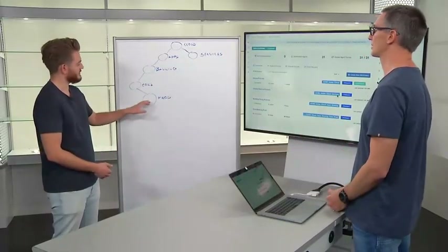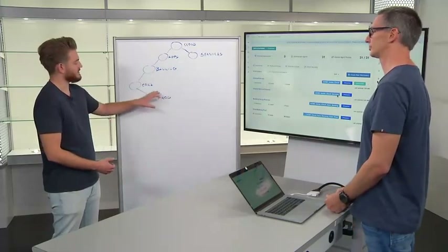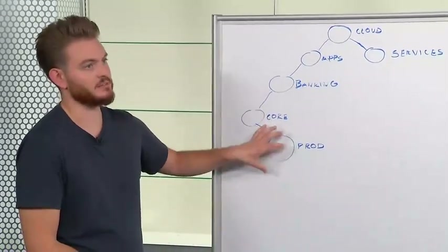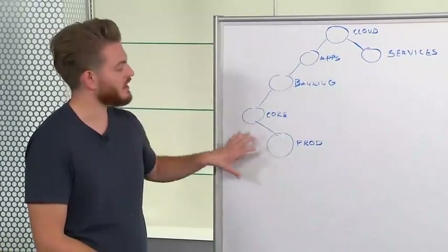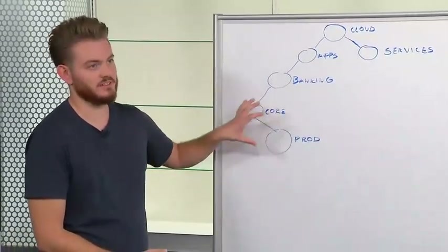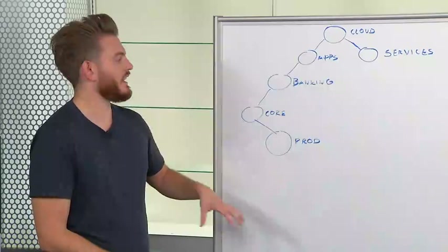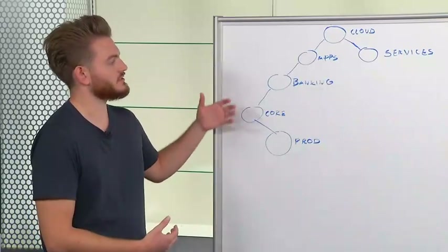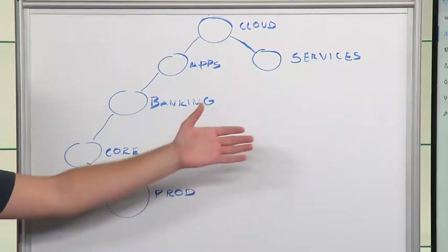It makes sense to keep those policies as close as possible to that scope and relating to that application only. But that can't be the only policies for a data center, and that's why we might want to associate some policies elsewhere.